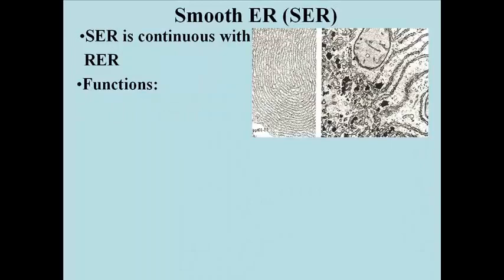Here are some TEMs of smooth endoplasmic reticulum. Like rough endoplasmic reticulum, SER can appear differently in cells. In the TEM on the left, we see a whorl of SER. On the right, the SER is less organized, and can be seen to be continuous with rough endoplasmic reticulum.